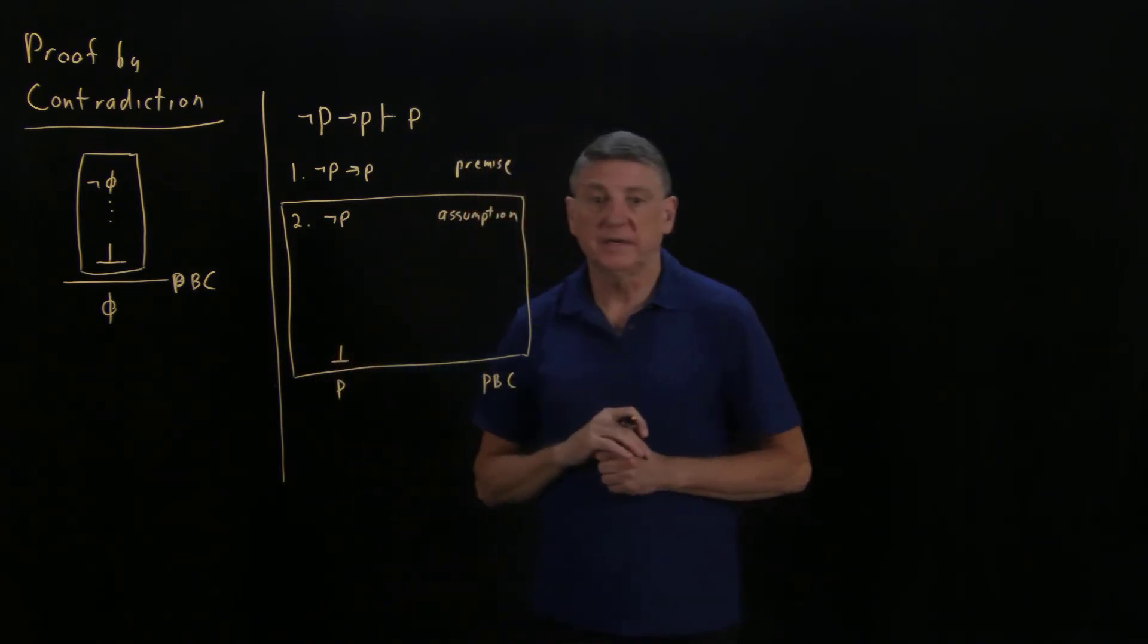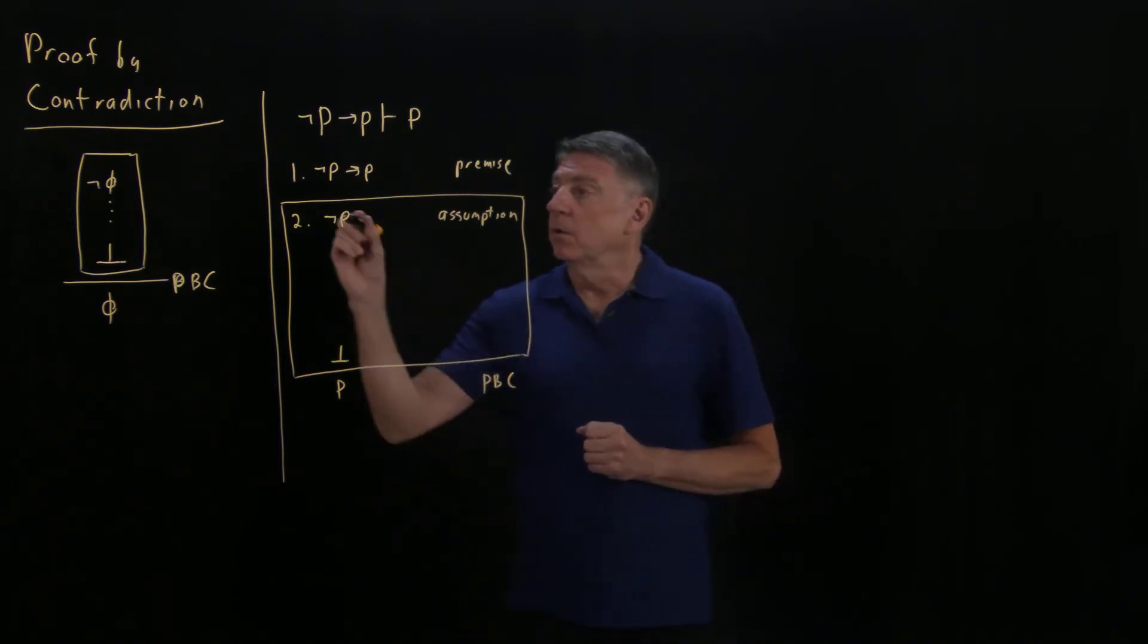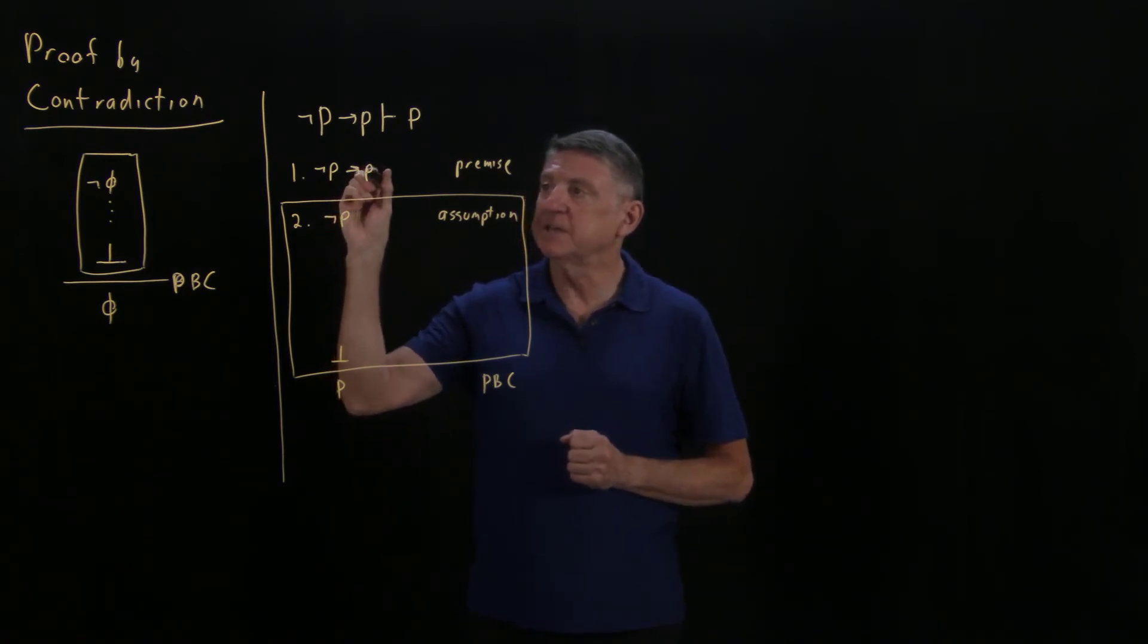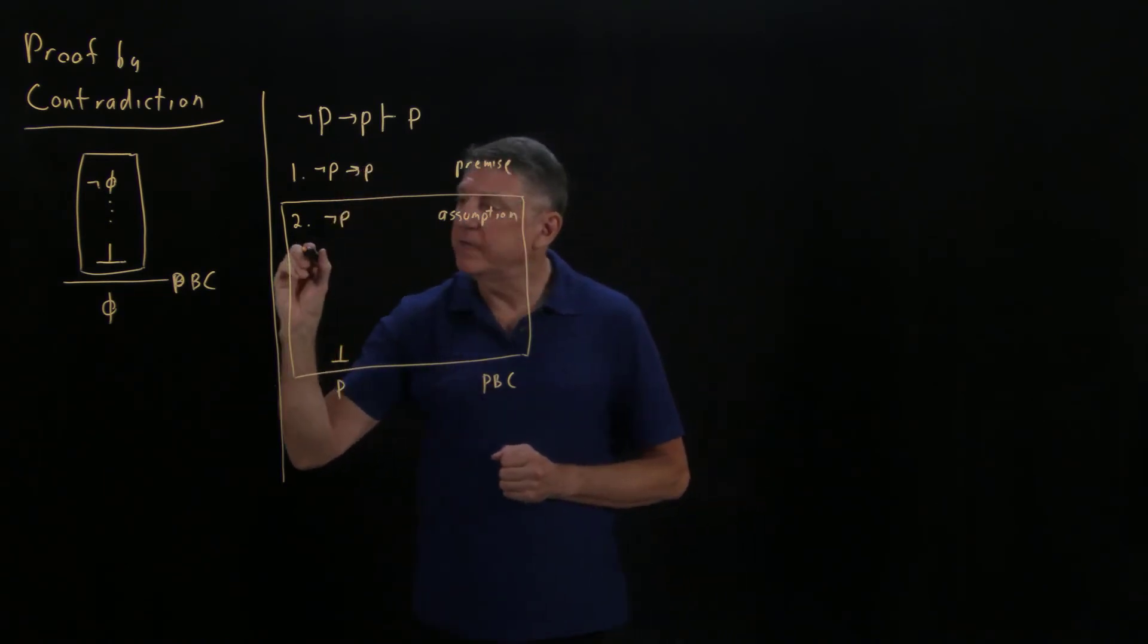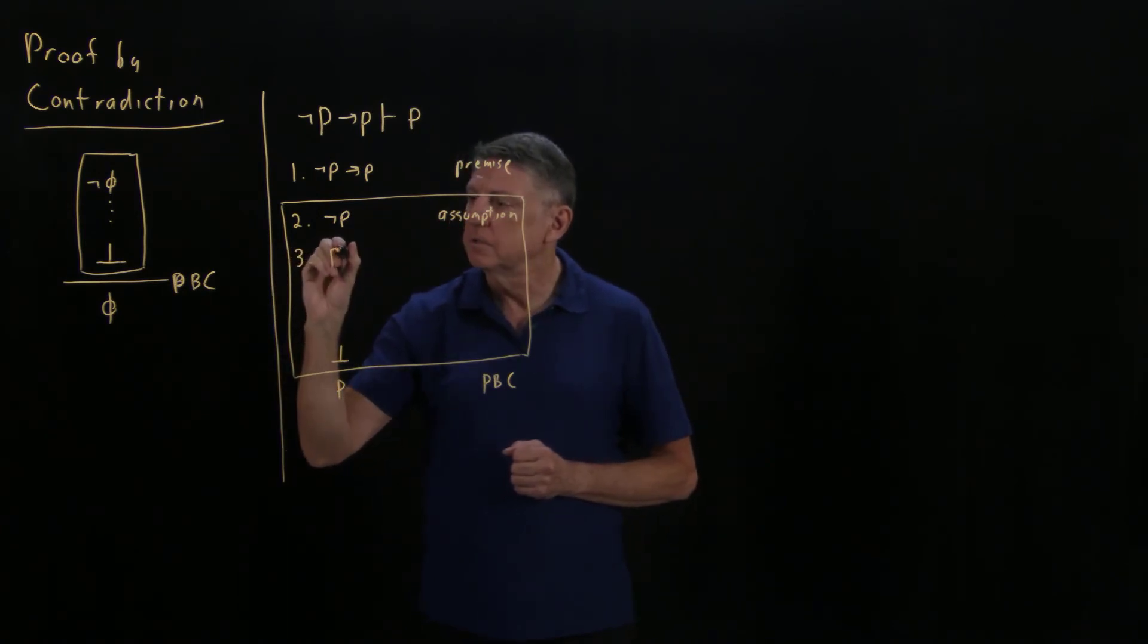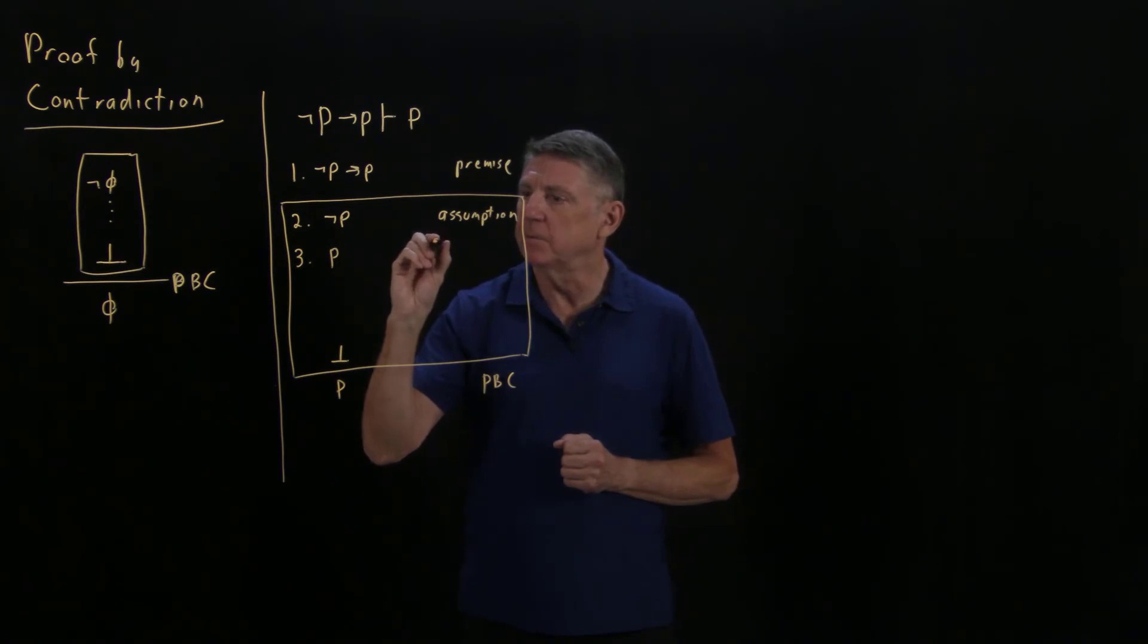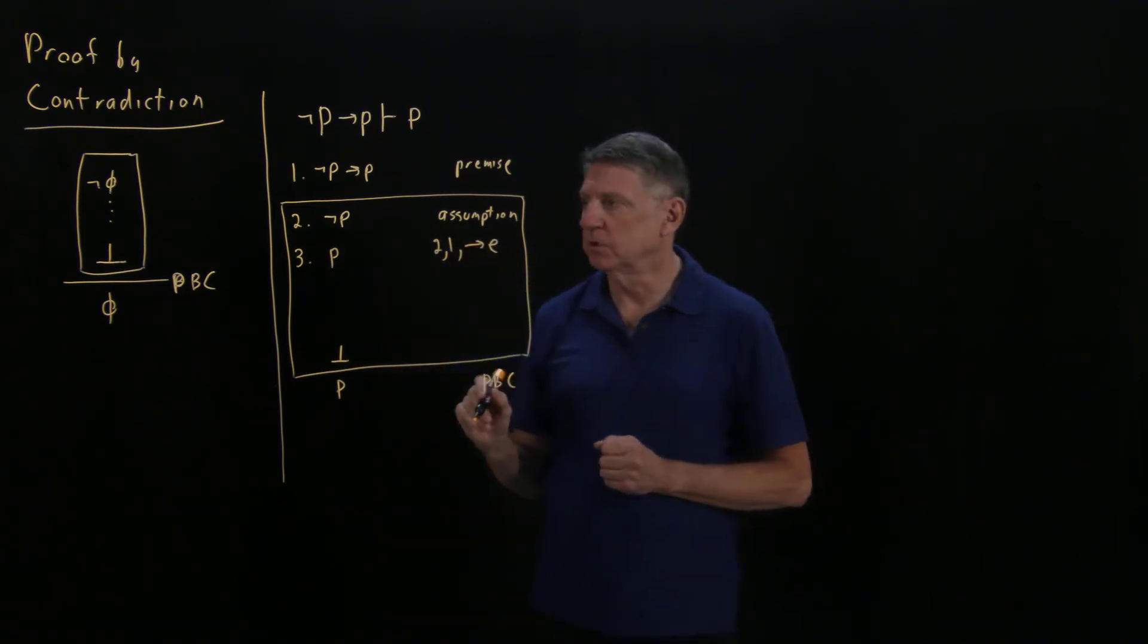Then we write the bottom line of the box, which in this case is the contradiction symbol. Our line of reasoning now is really simple, really short. If we apply implication elimination, or modus ponens, to this formula using this assumption, what we get is line 3 of our proof, which is the symbol P. We got that from applying line 2 and line 1 and implication elimination, or modus ponens.